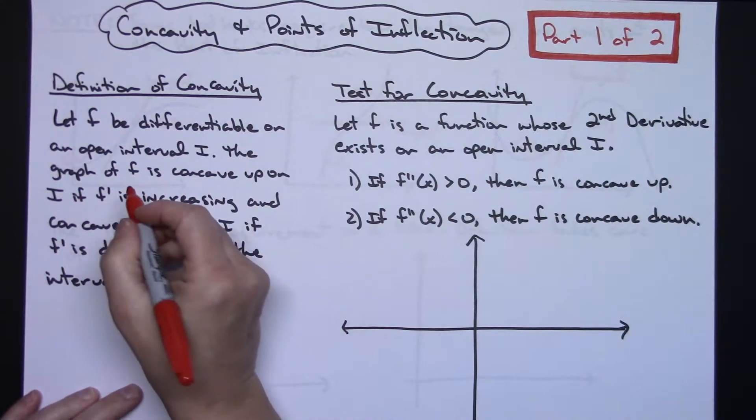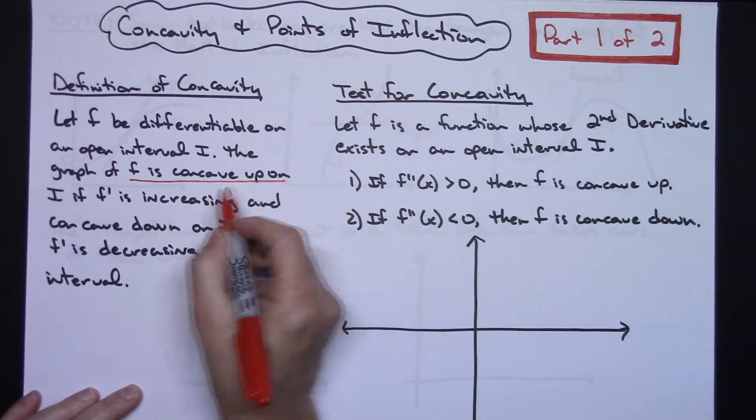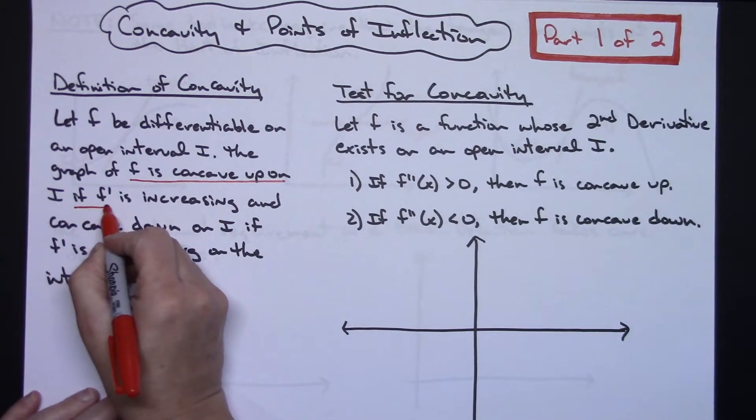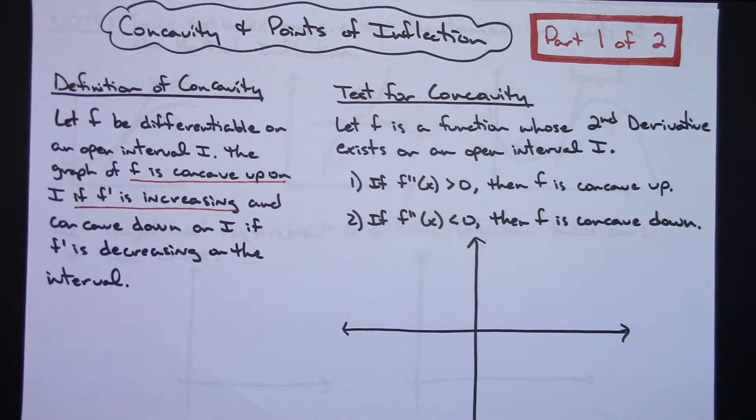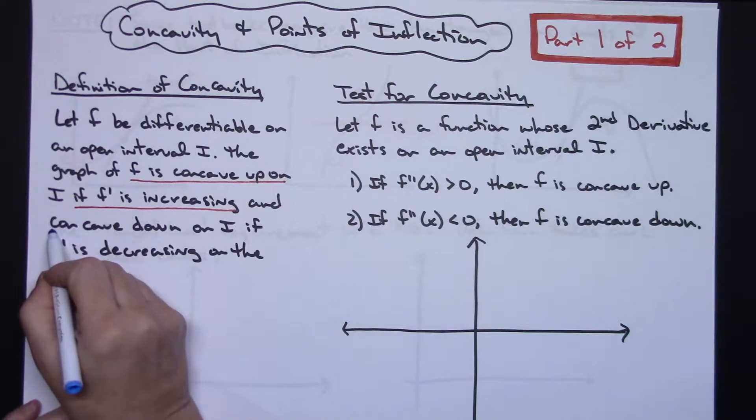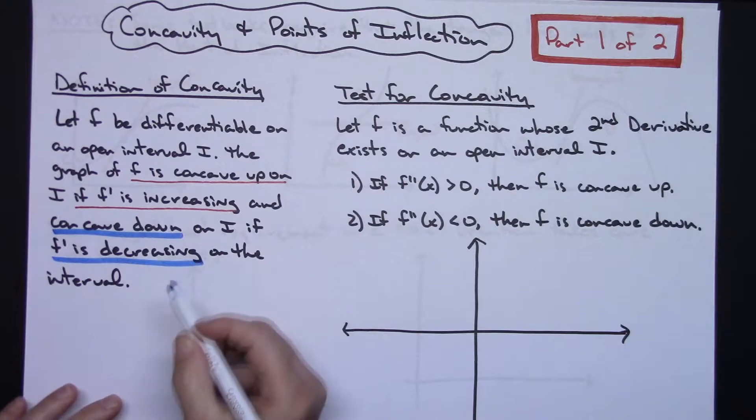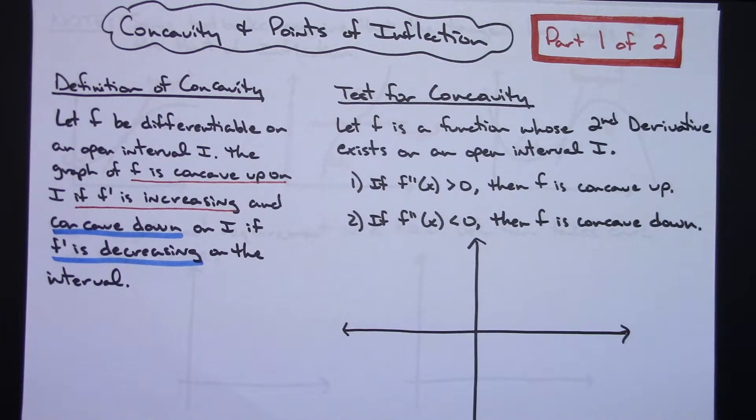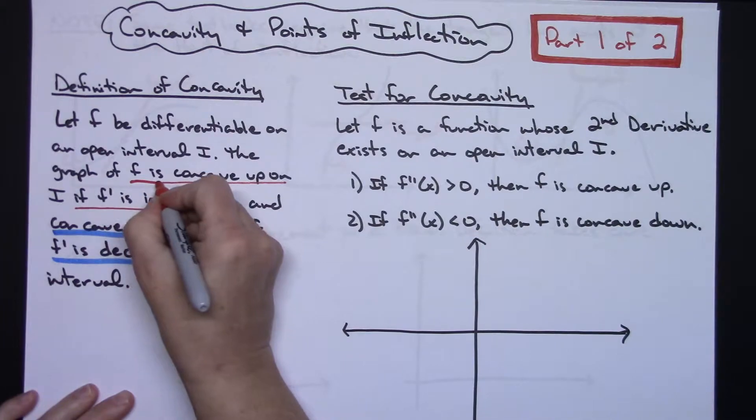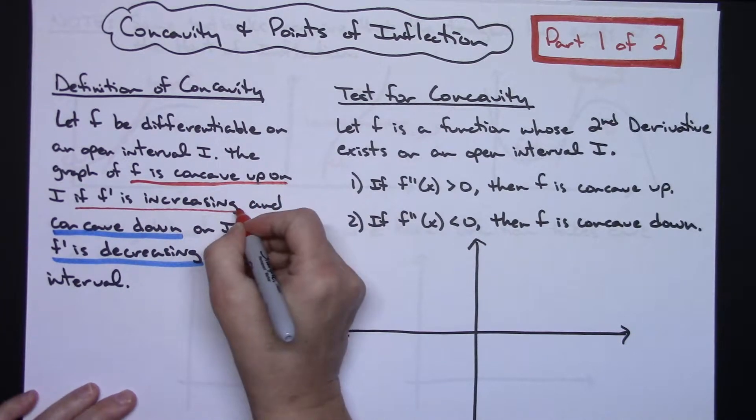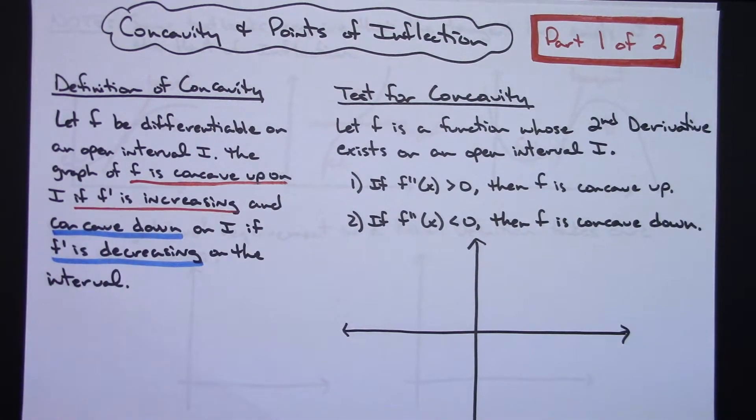The graph of F, so F is concave up if F prime is increasing. That's going to be something that you're going to want to remember later when you get into curve sketching. It becomes very important. And F is concave down on the interval if F prime is decreasing. So definitely two very important things in that paragraph definition that you would need to memorize that really doesn't stand out when you first read it.